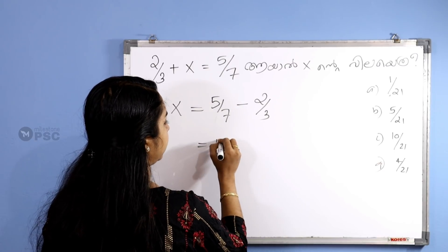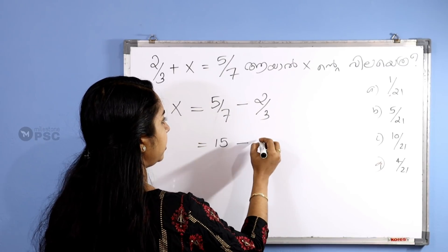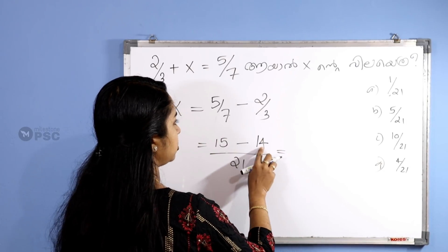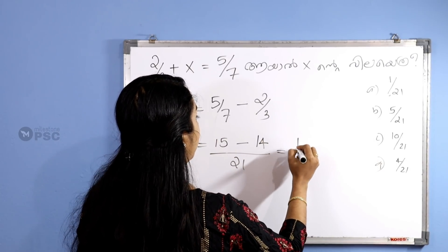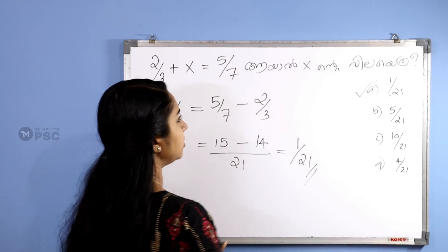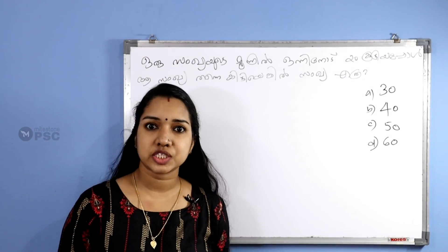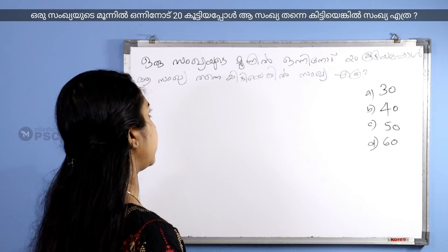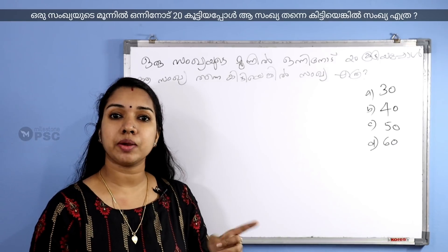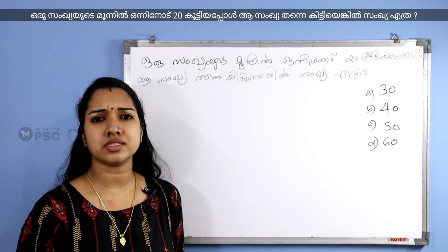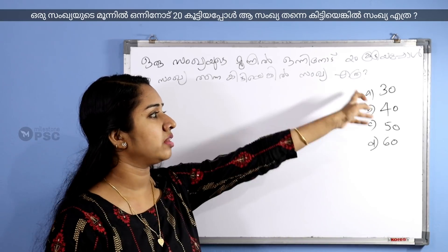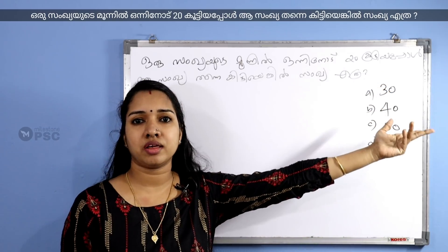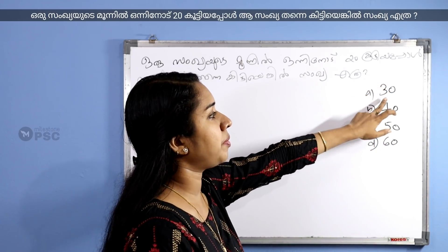3 into 5 is 15, minus 2 into 7 is 14, 8 into 3 is 24, and 15 into 14 is 21. There is a selection method using options. If you satisfy the conditions and find any equal number on your secondary side, you can answer it.